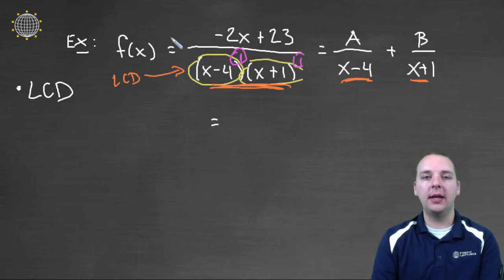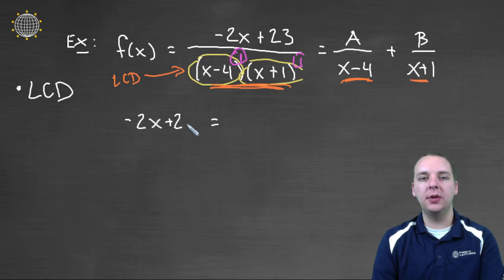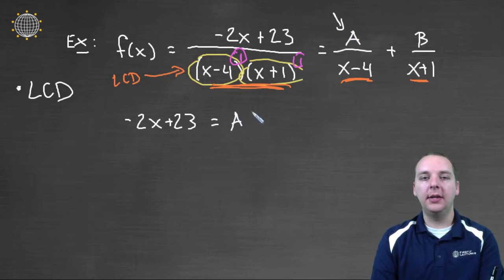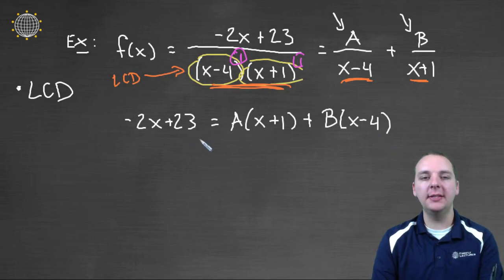So let's do that. Multiply the left side by x minus four times x plus one. These cancel, cancel, and you'll get negative two x plus twenty-three. Equal to, when you distribute the LCD to this term, the x minus fours cancel, but you still have an A, and you still have an x plus one. When you distribute the LCD to this term, the B stays, the x plus ones cancel, and you'll be left with an x minus four this time. Alright, so we get this equation, but it's not an equation like you would traditionally think.